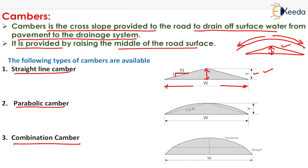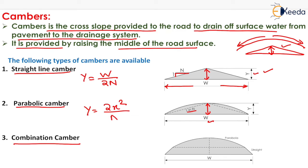If we want to compute the value of Y for straight line camber, it will be equal to W divided by 2N. Now for parabolic camber, this distance is Y, the slope is 1 in N as written here, and the overall width is W.